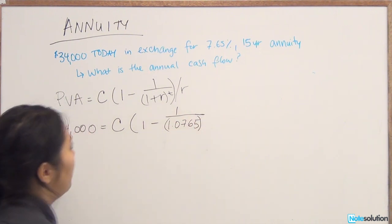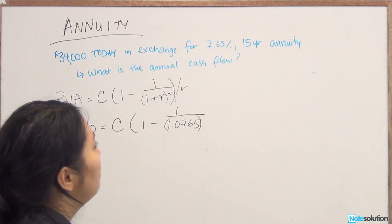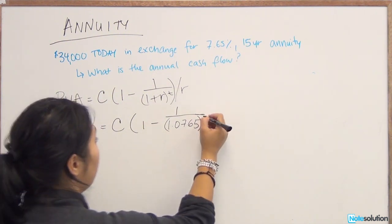And then that has to be brought to the power of T, your time period. From the question, you know that your annuity is going to be for 15 years, so you bring it to the power of 15.